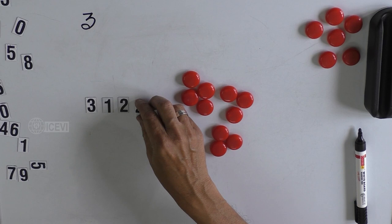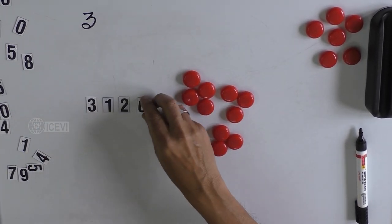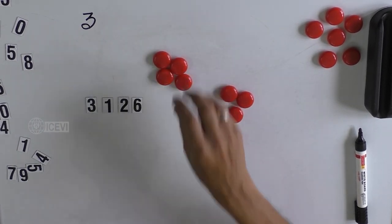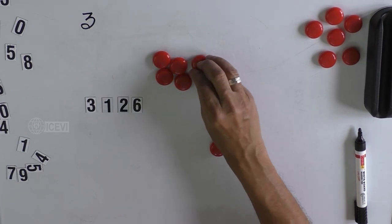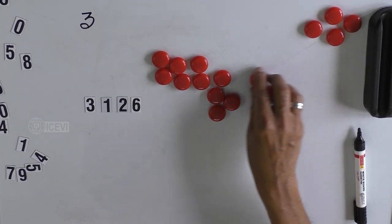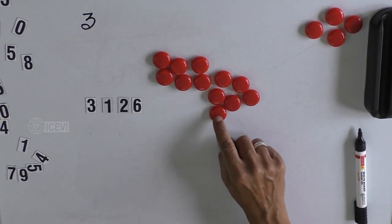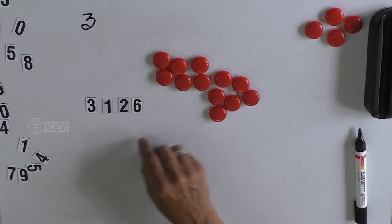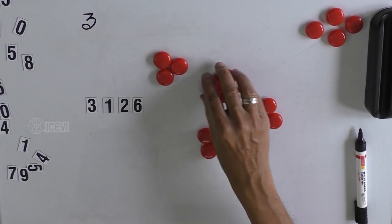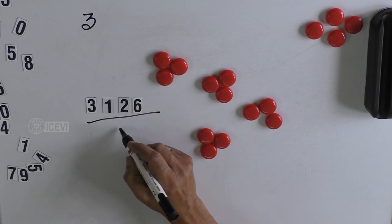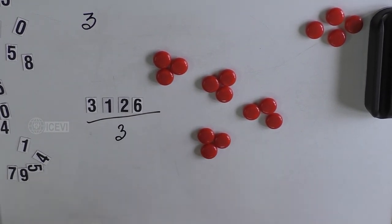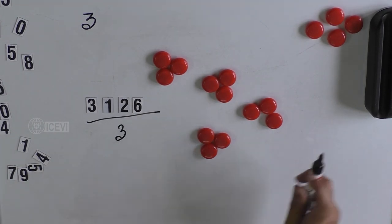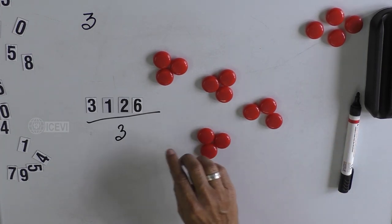Let us take another number: 3, 1, 2, 6. Apply the rule — add 3, then 1, then 2, then 6. Counting: 1, 2, 3, 4, 5, 6, 7, 8, 9, 10, 11, 12. So: 3 plus 1 is 4, 4 plus 2 is 6, 6 plus 6 is 12. Group in terms of 3 — there is no remainder. That means 3126 divided by 3 gives no remainder, so 3126 is divisible by 3.